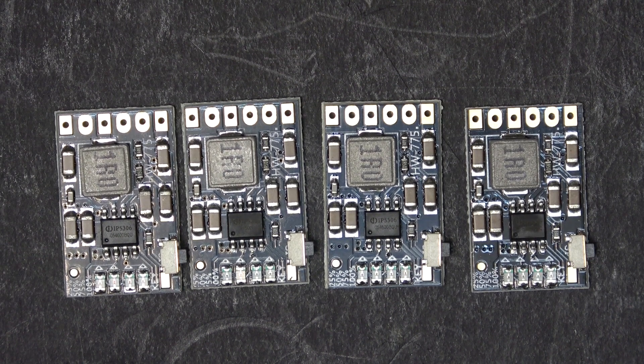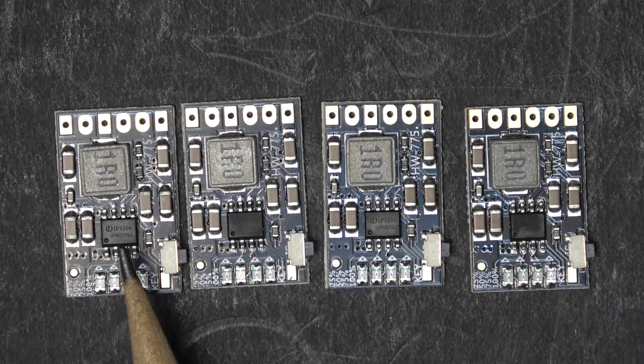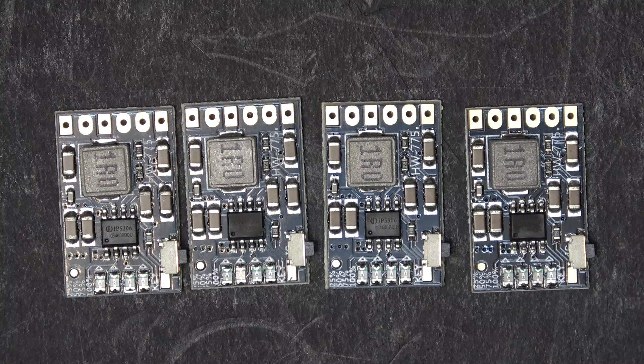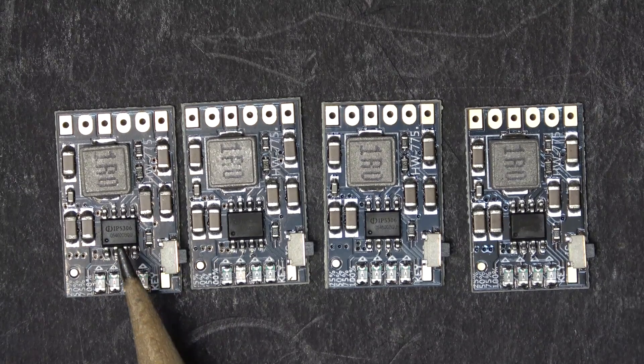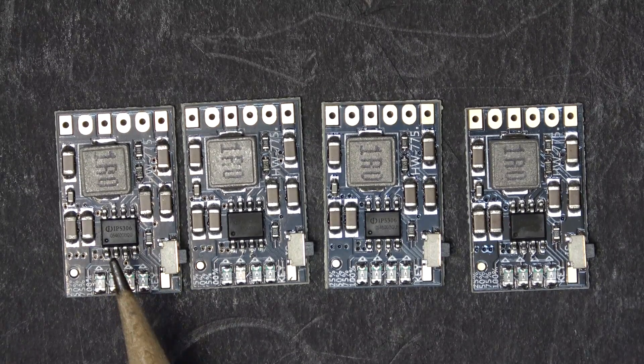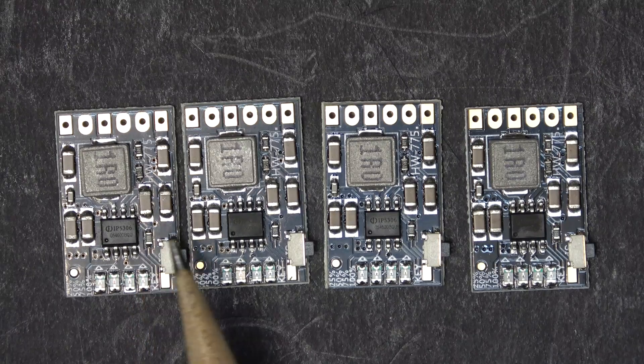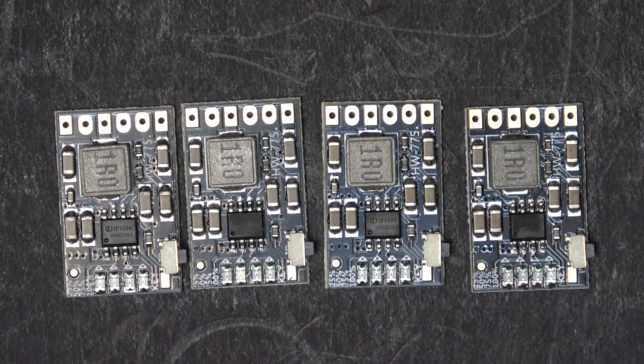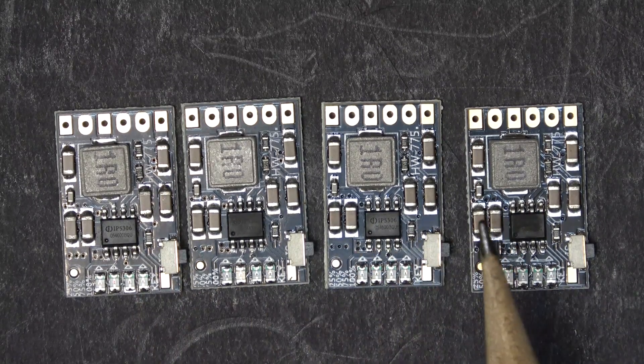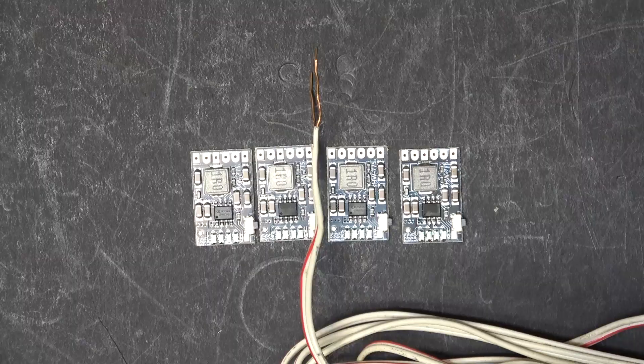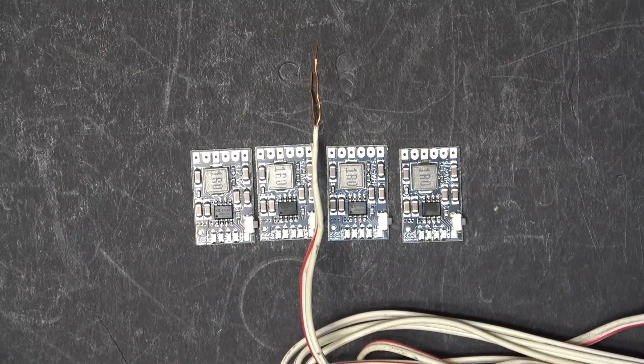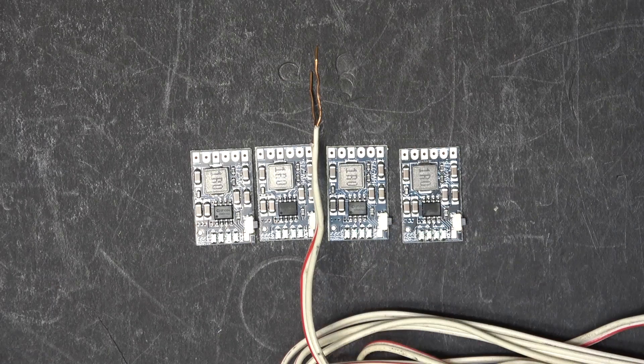Next up we've got the IP5306 charging and discharging boards. One of these can charge lithium-ion battery at 2 amps. I've got four of these. I'm going to put them in parallel. The total current output would be 8 amps. But this time I have to be careful because the current is higher.